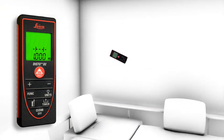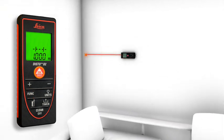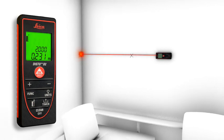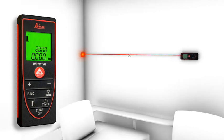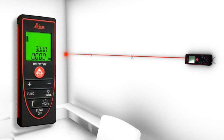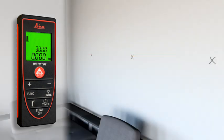The stakeout function is used to stake out equal distances. The instrument gives an audible signal as soon as a preset distance or a multiple thereof is reached.